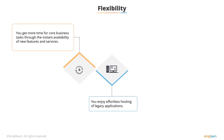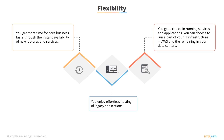AWS does not require rewriting legacy applications or learning new technologies. Migrating legacy applications to AWS gives the benefits of advanced computing as well as efficient storage. Additionally, you get a choice in running services and applications — AWS is flexible enough to run services and applications separately or together as a platform. You can even choose to run a part of your IT infrastructure in AWS and the remaining part in your own data centers, which large organizations usually prefer.